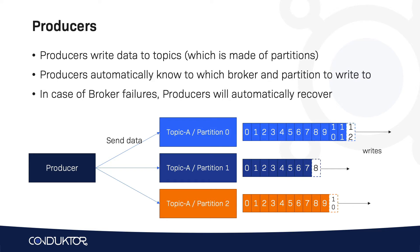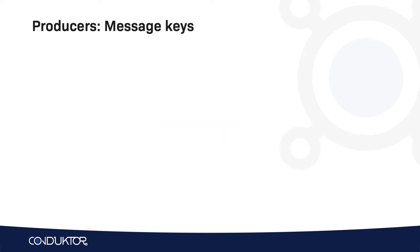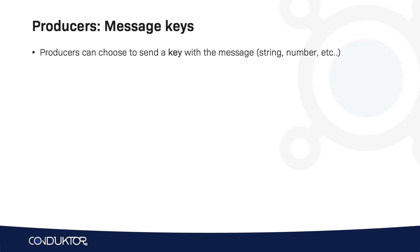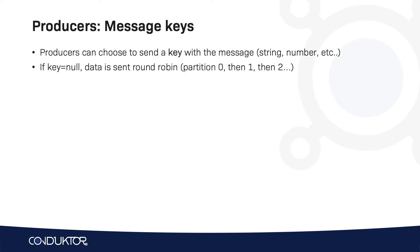So how does a producer know how to send the data to a topic partition? For this we can use message keys. Alongside the message value we can choose to send a message key, and that key can be whatever you want — it could be a string, it could be a number. If you don't send the key, the key is set to null, and the data will be sent in a round-robin fashion. That means your first message goes to partition 0, then partition 1, then partition 2, and so on.